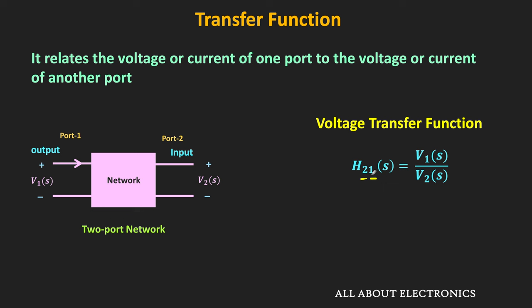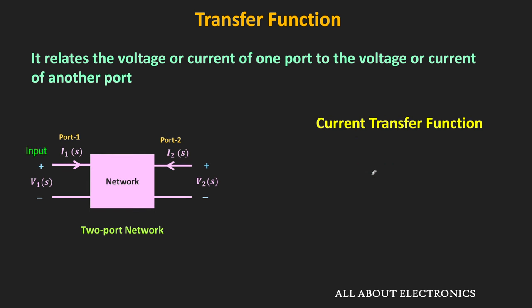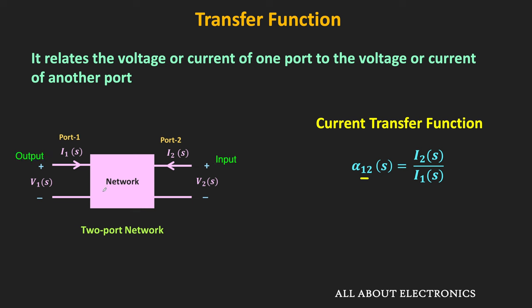Instead of voltage, if we take the ratio of the output current to the input current, it is defined as the current transfer function. If port 1 is the input and port 2 is the output, then the current transfer ratio α12 equals I2 divided by I1, where the first subscript represents the input port and the second the output port. Conversely, if port 2 is the input and port 1 is the output, then α21 equals I1 divided by I2. In general, the current transfer ratio is the ratio of the output current to the input current.